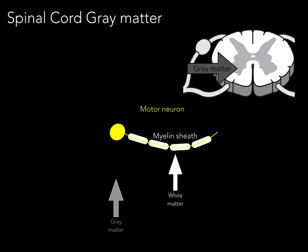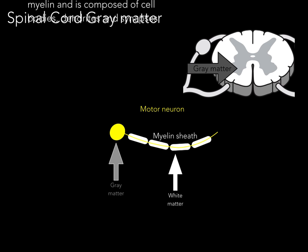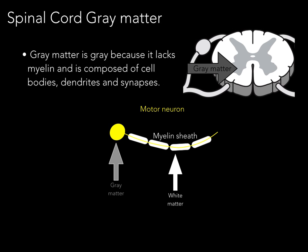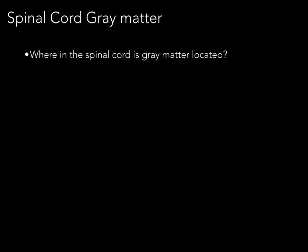The part that consists of cell bodies, dendrites, and synapses is really just gray matter because it's not white — it's off-white, so we call it gray matter. Therefore, gray matter is gray because it lacks myelin and is composed primarily of cell bodies, dendrites, and synapses.